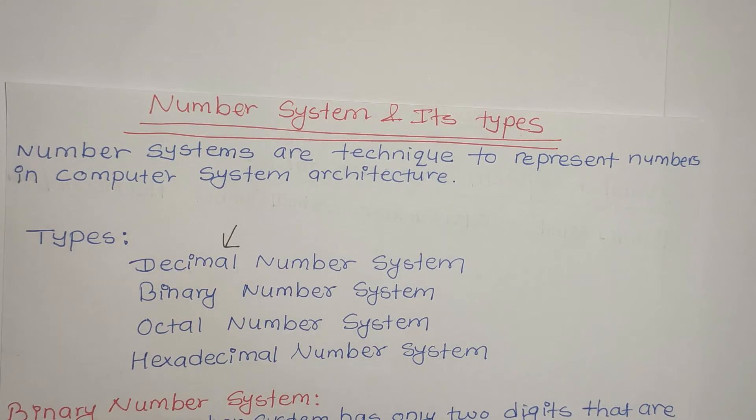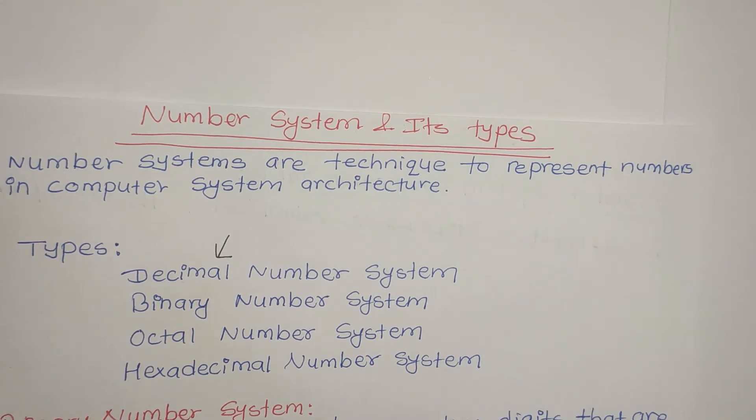The four types of number system are: decimal number system, binary number system, octal number system, and hexadecimal number system.